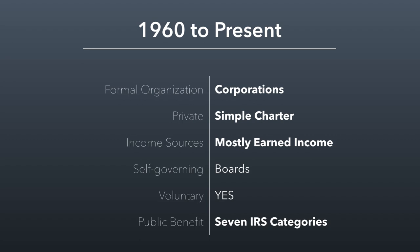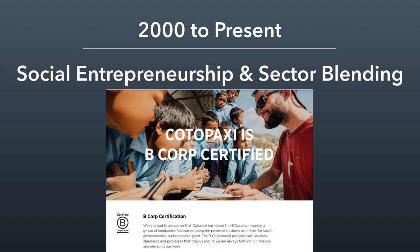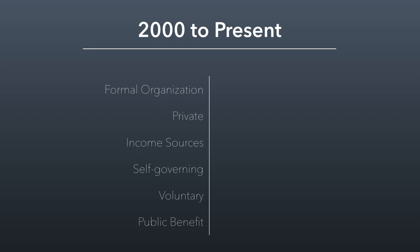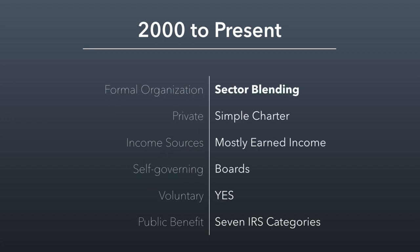What's been happening since 2000 is really defined by one dominant change: nonprofits are becoming more business-like, and businesses are becoming more like nonprofits. Cotopaxi, a Utah company that makes outdoor gear, is a great example of this. We're going to talk about what B corporations are in session 1.4. The essence of it is that from the 2000s on, what we've seen is blending or overlap between what nonprofits and for-profits have traditionally done — nonprofits acting more and more like businesses, but also businesses operating not just for return to shareholders but also to impact the world in a positive way. Sector blending is the interesting thing happening on the formal organization side.